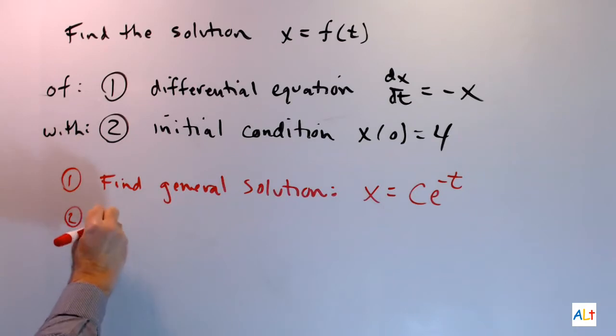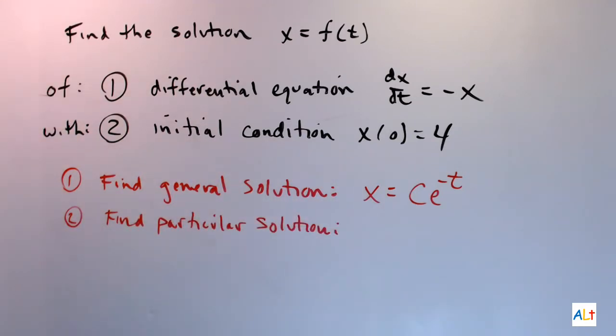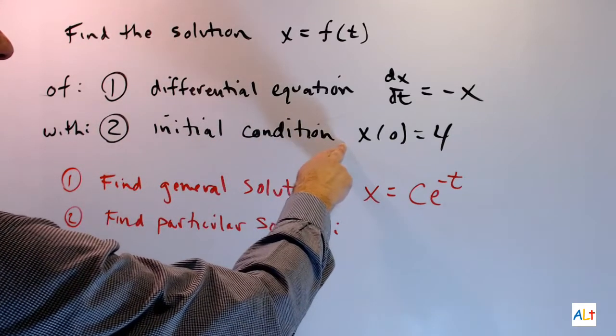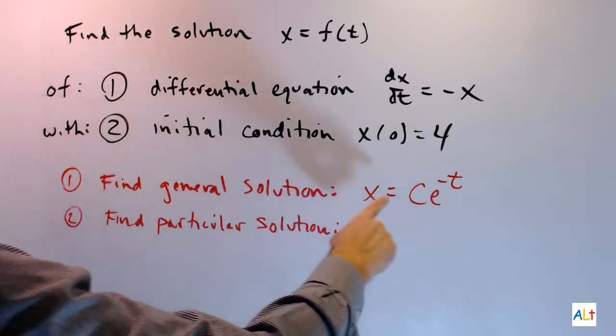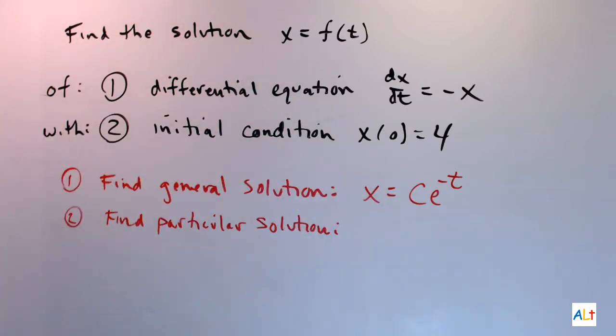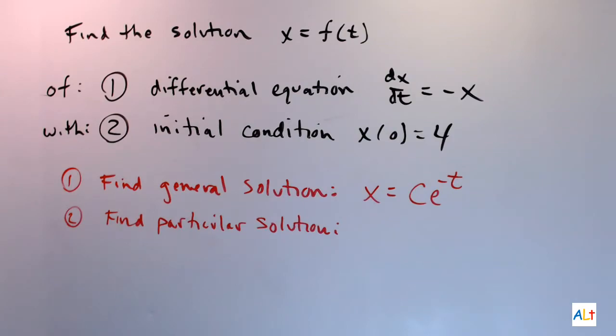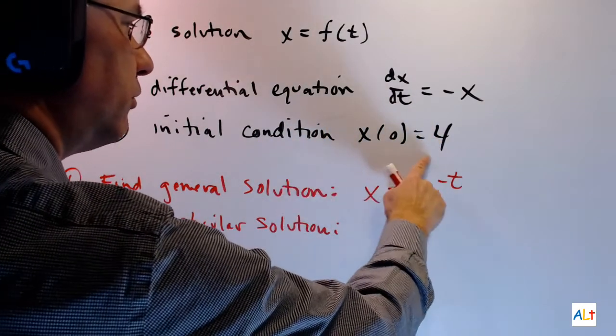The next part is the easier part. You find a particular solution. And that's what you get from this initial condition. If there was no initial condition, then we would simply find the general solution and then we would be done. But the initial condition is now telling us we need to find one particular solution that fits this information right here. So what does this even mean?